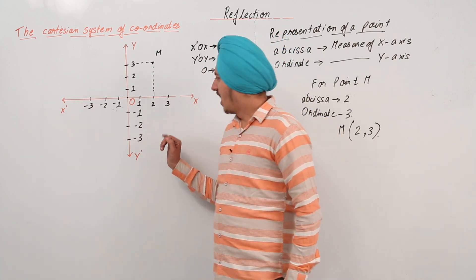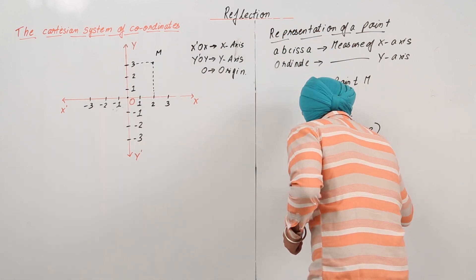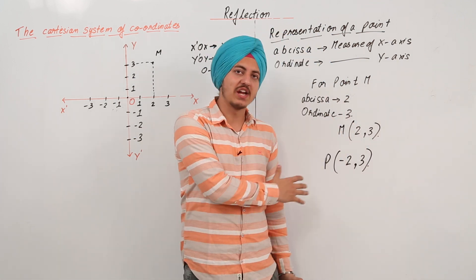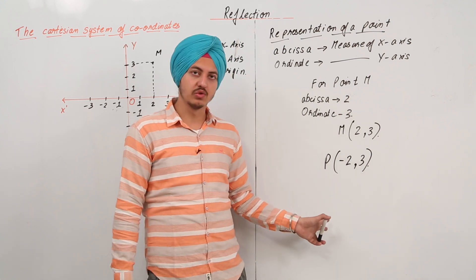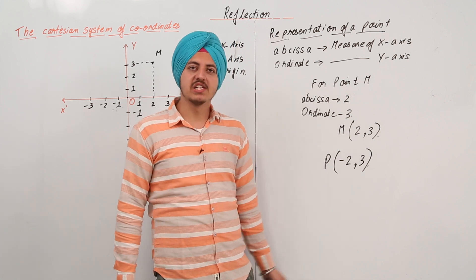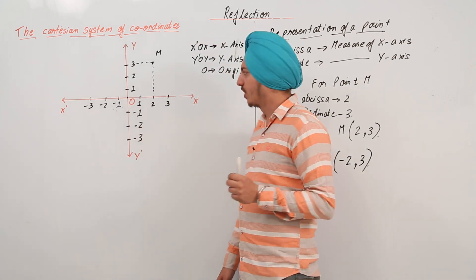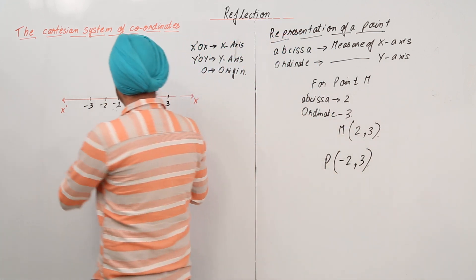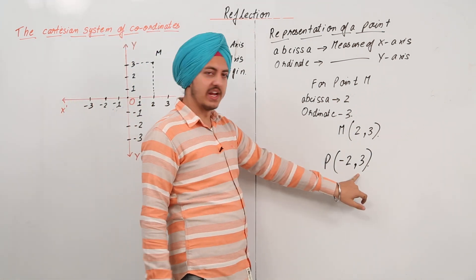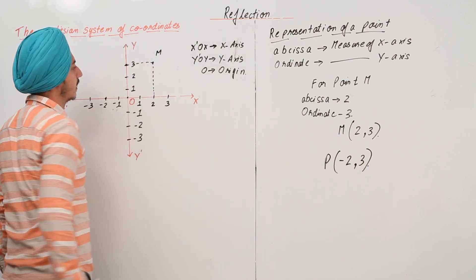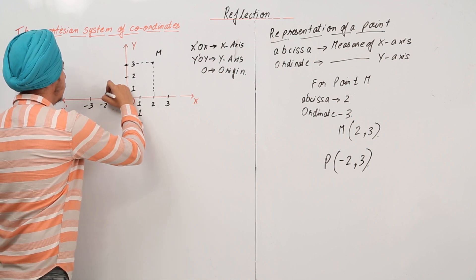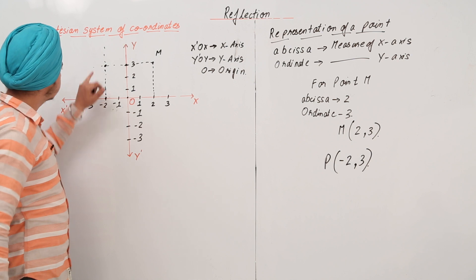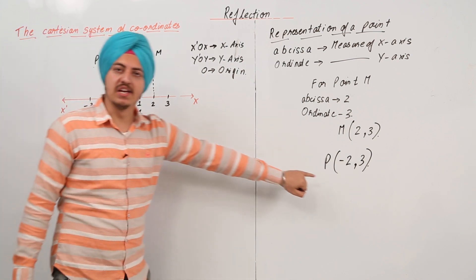Now, how will you represent a point P equal to (-2, 3) on this graph? Try doing this on your own first. The abscissa, the x-coordinate written first, is -2, so we go to -2 on the x-axis. The ordinate is 3, which is 3 up on the y-axis. We draw straight perpendiculars from both values and wherever they meet is point P, whose coordinates are (-2, 3).